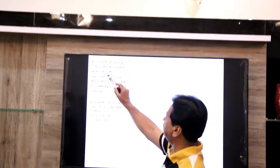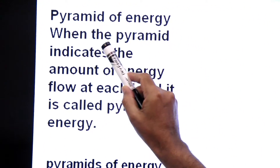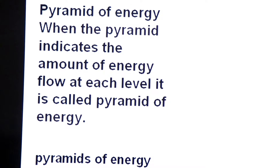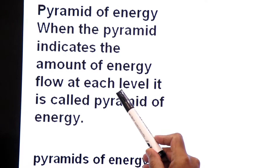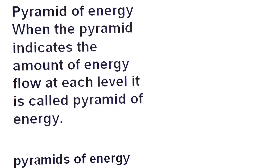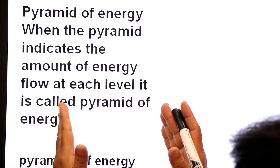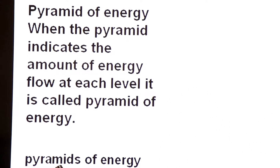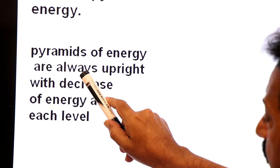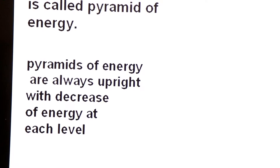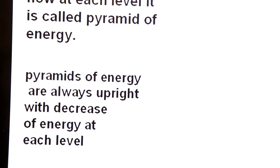In our textbook, a specific type of pyramid is given — the pyramid of energy. We will first define what is the pyramid of energy. When the pyramid indicates the amount of energy flow at each trophic level, it is called the pyramid of energy. In a pyramid of energy, the pyramid is always upright, with decreasing amounts of energy at each level.